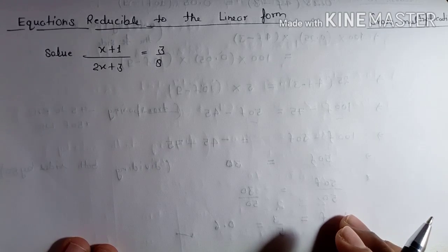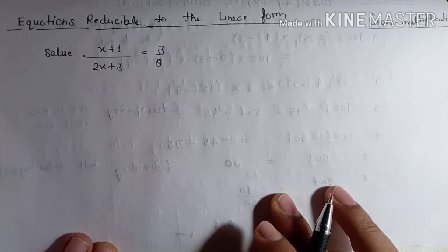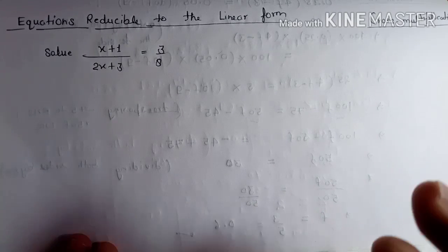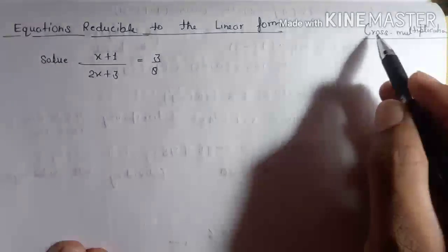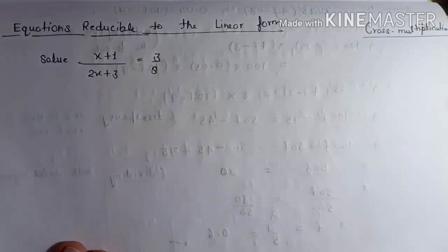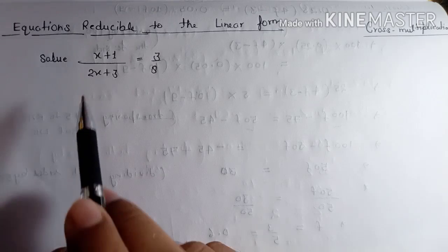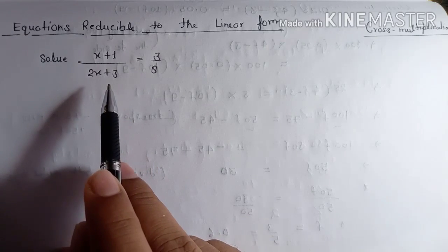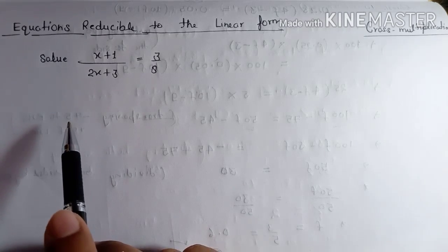For this new exercise 2.6, we need to discuss first equations reducible to the linear form. Especially in this chapter, you have to study about cross multiplication. You can see there are two algebraic expressions written as a numerator and denominator, and how to solve this you don't have any clue right now.